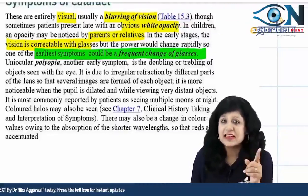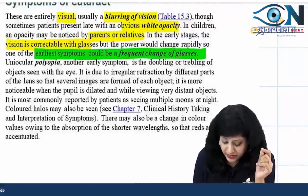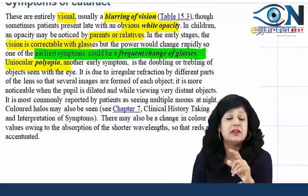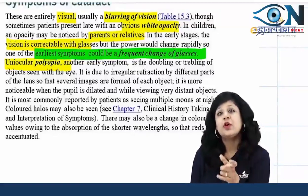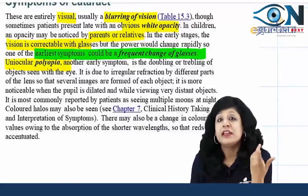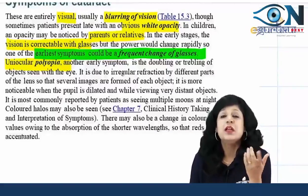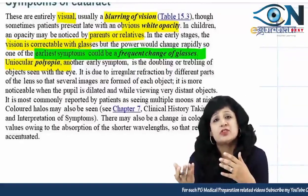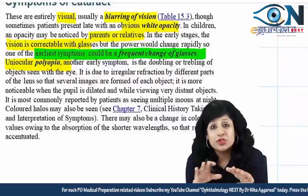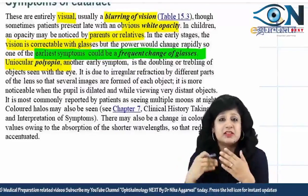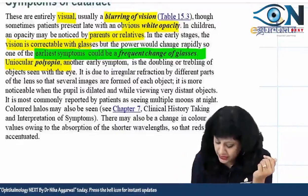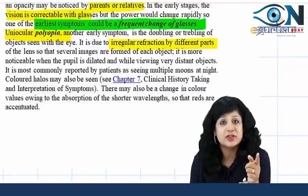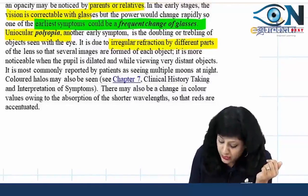And which glasses? The distant glasses. Another important early symptom is uniocular polyopia. Uniocular polyopia is always a feature of the early stages of cataract because it occurs due to uneven opacification. As we move towards more mature stages of cataract, we have more homogeneous opacification and lesser polyopia. Doubling or trebling of images is due to irregular refraction by different parts of the lens, forming several images in cases of uniocular polyopia.